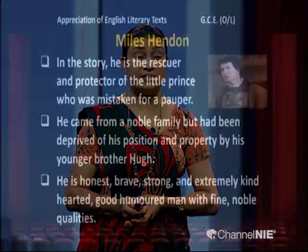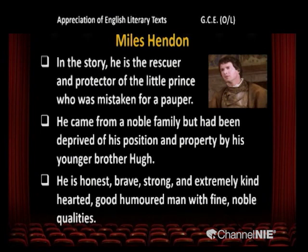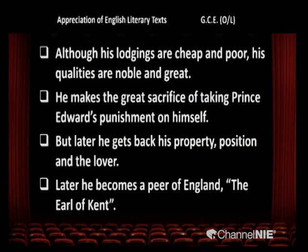Then Miles Hendon — in the story he is the rescuer and protector of the little prince, who was mistaken for a pauper. He came from a noble family but had been deprived of his position and property by his younger brother Hugh. He is honest, brave, strong, and extremely kind-hearted, good-humoured, a man with fine noble qualities. Again, you cannot judge this person by his clothes — he is also wearing rags, but his qualities are noble and great. Although his lodgings are cheap and poor, he makes the great sacrifice of taking Prince Edward's punishment on himself. Later he gets back his property, position, and lover, and becomes a peer of England — the Earl of Kent.